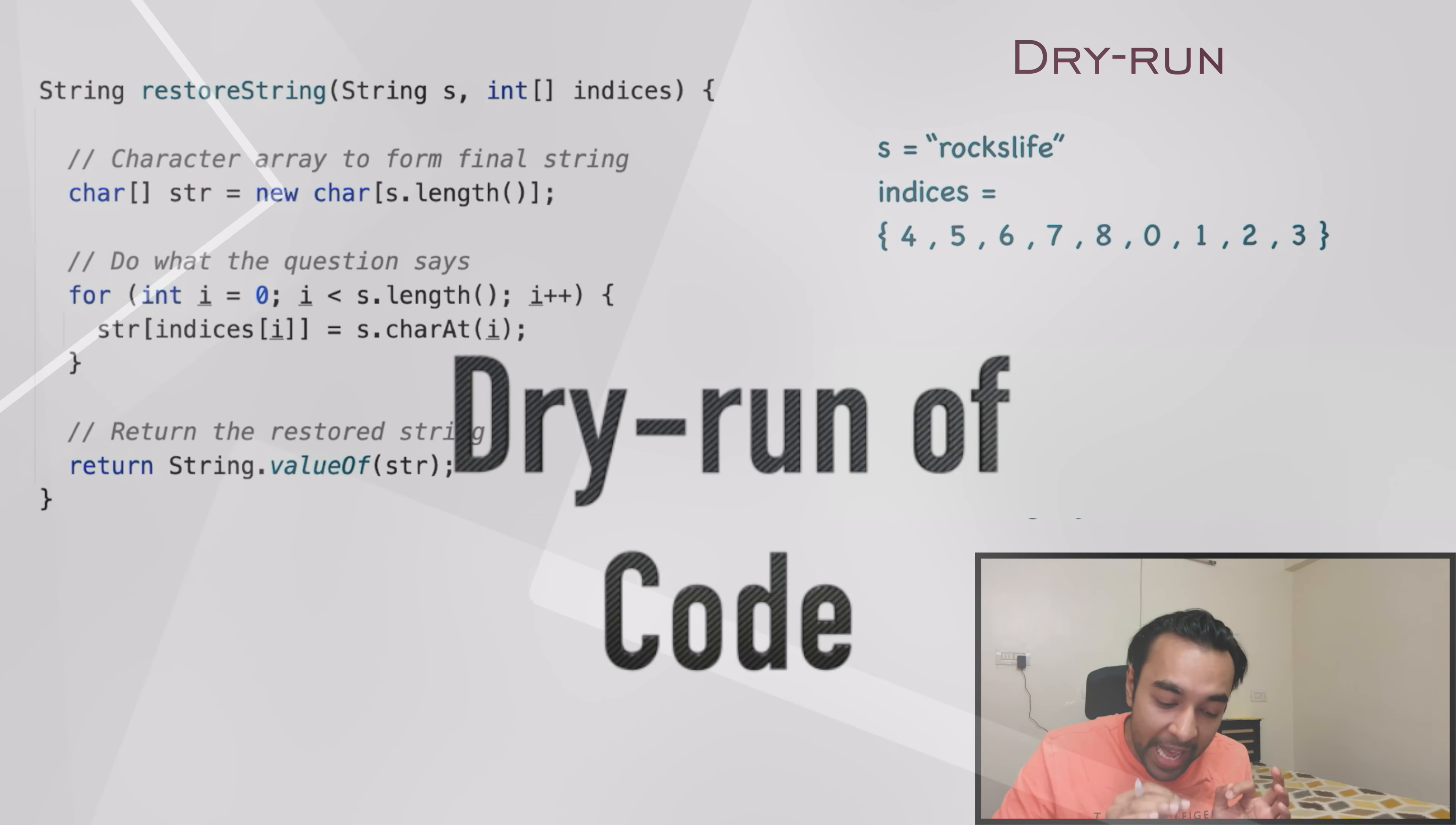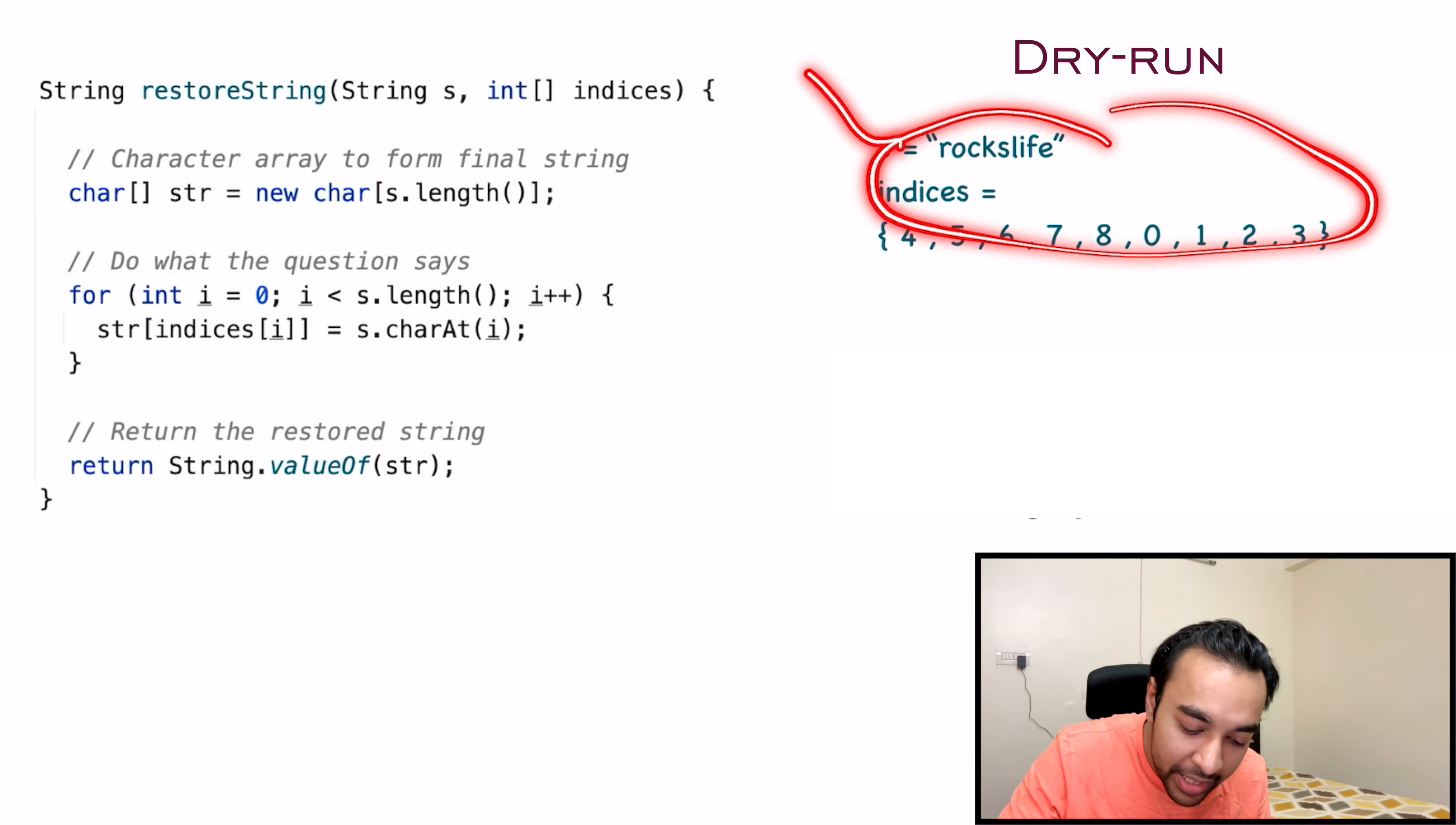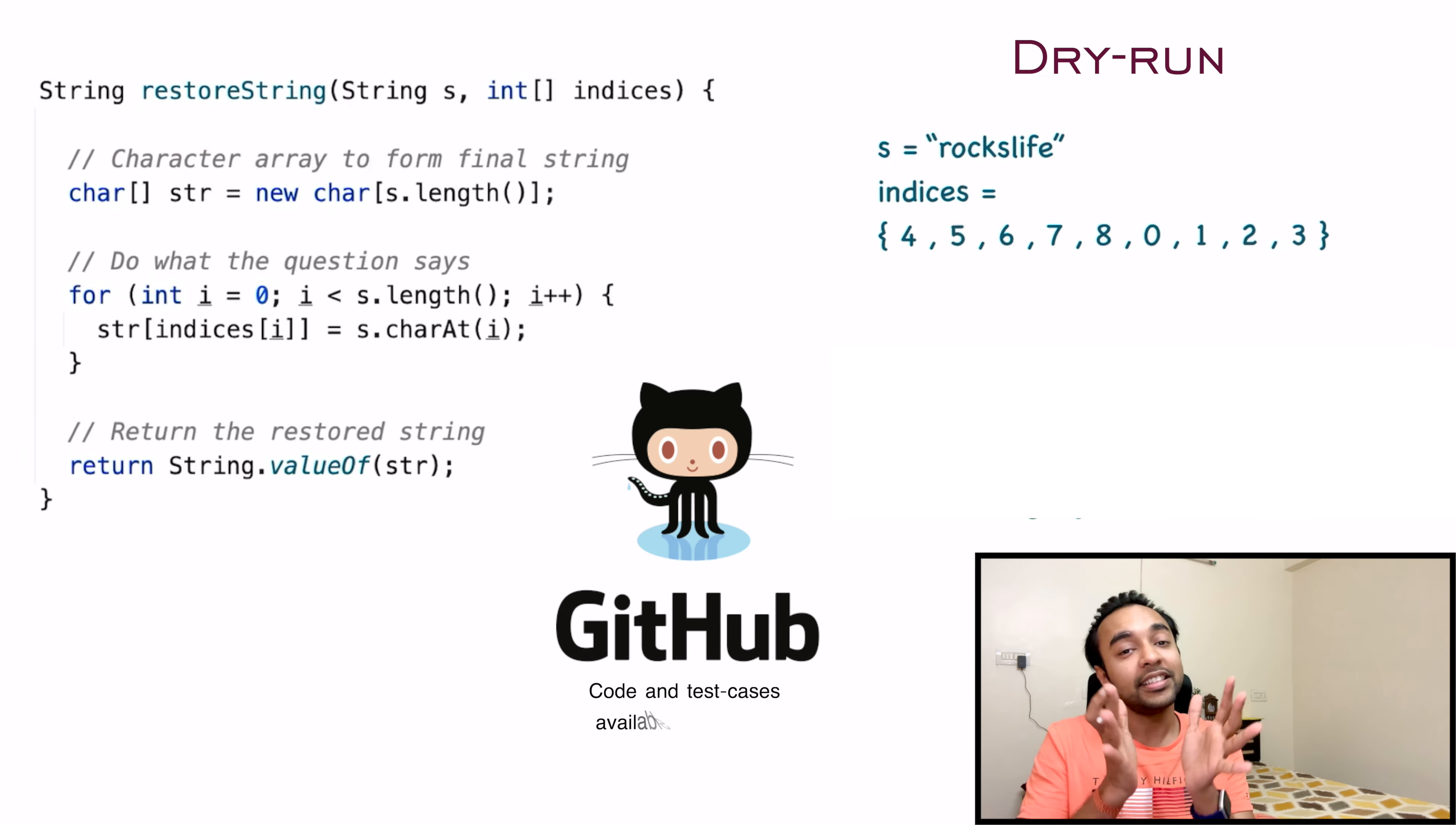On the left side of your screen, you have the actual code to implement this solution. Yes, it is that concise. And on the right, once again, I have my sample test case that is passed in as an input parameter to the function restore string. Oh, and by the way, this complete code and its test cases are also available in my GitHub profile. You can find the link in the description below.